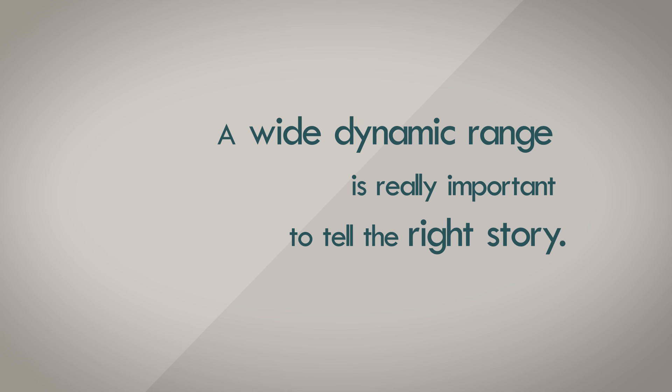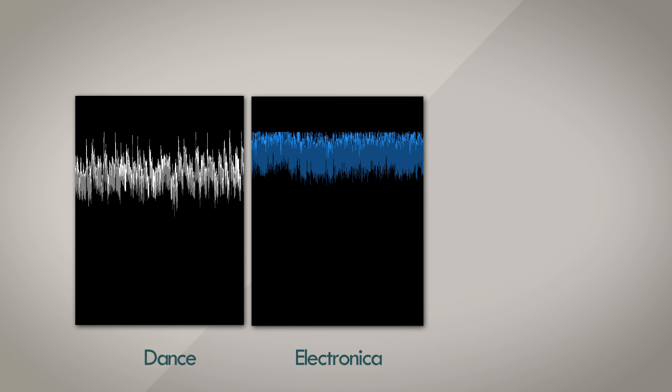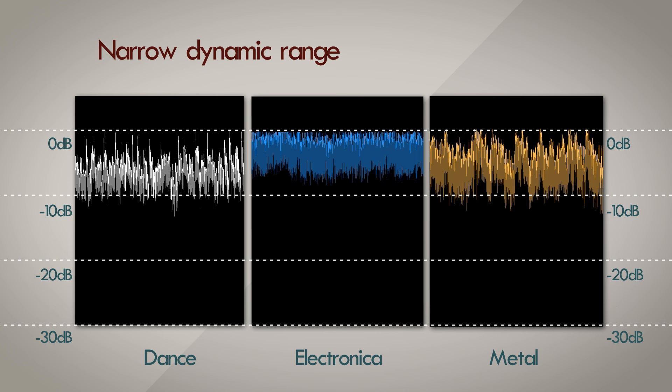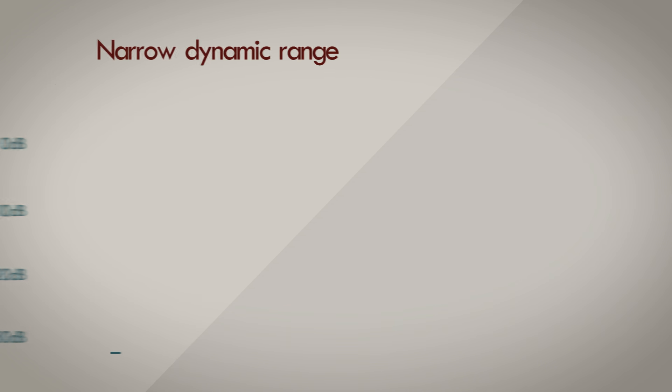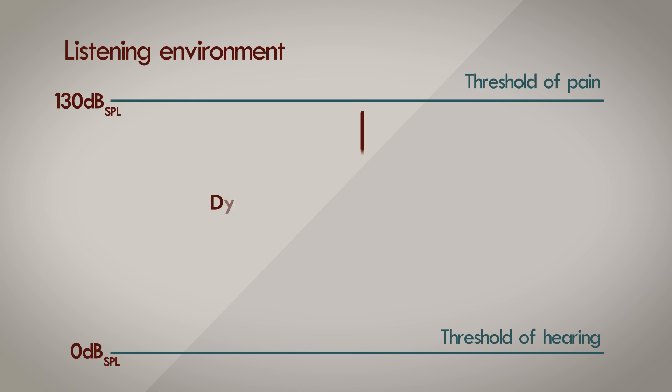On the other hand, certain genres of music like dance music, electronica or metal, don't require a wide dynamic range since the music is generally loud all the time. A listening environment makes a lot of difference as well. Listening to songs in a car stereo system while driving drops the overall dynamic range that's available to us. That's because the road, the wind and the traffic noise all act together to reinforce the noise floor, lower than which the music from the stereo is just not heard.